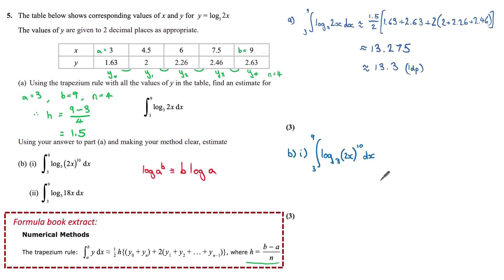This means our integral of log base 3 of 2x to the power 10 can be written as the integral of 10 times log base 3 of 2x dx. This is the same as 10 lots of the integral of log base 3 of 2x dx. Now we have our approximation for log base 3 of 2x between 3 and 9, which is to one decimal place, 13.3. So our answer is 10 times this 13.3, which is 133.